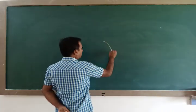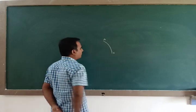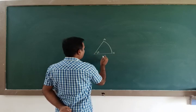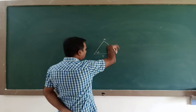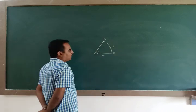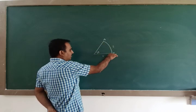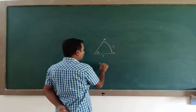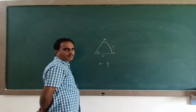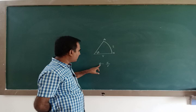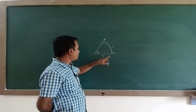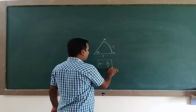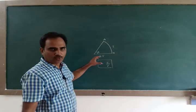Here there is an arc AB. This arc subtends an angle theta at a distance R. Say the length of this arc is S. Then the relation between this arc length, this distance R — sometimes we call it the radius — and this angle theta is: theta is equal to S divided by R. You need to know this equation.